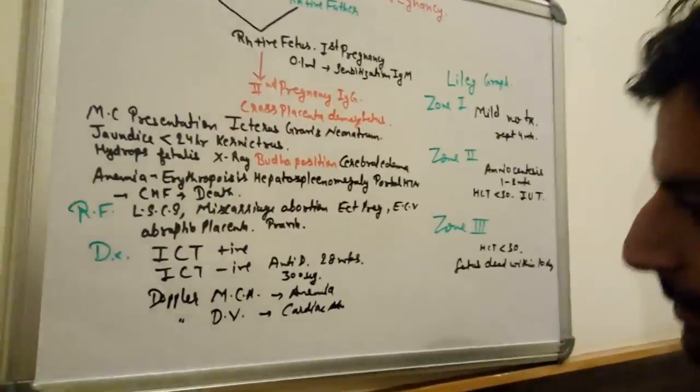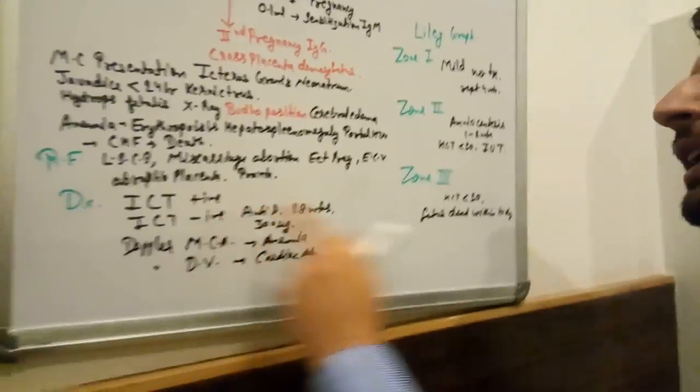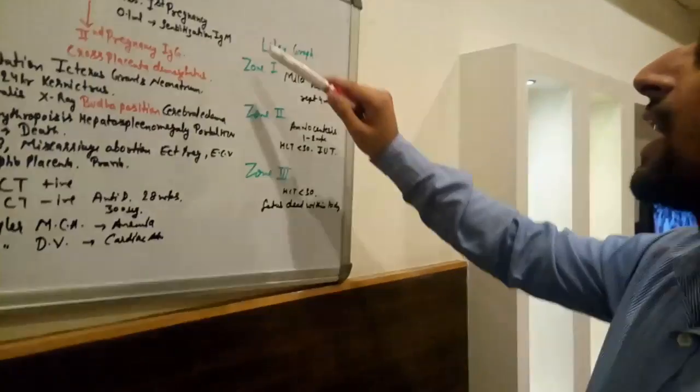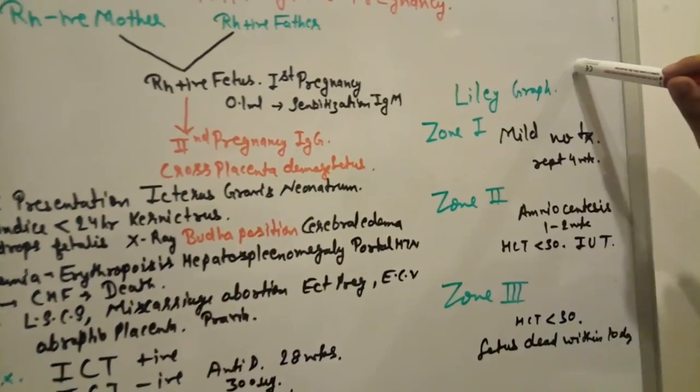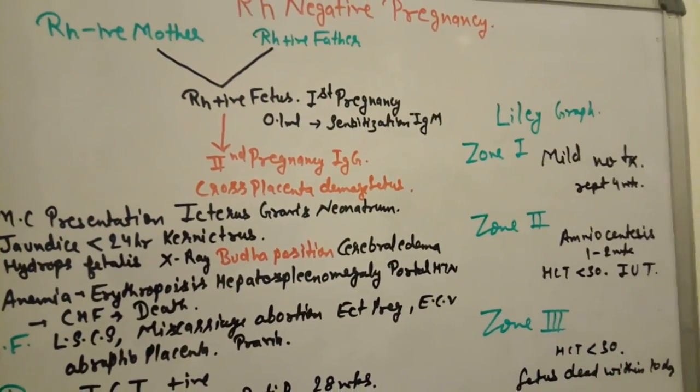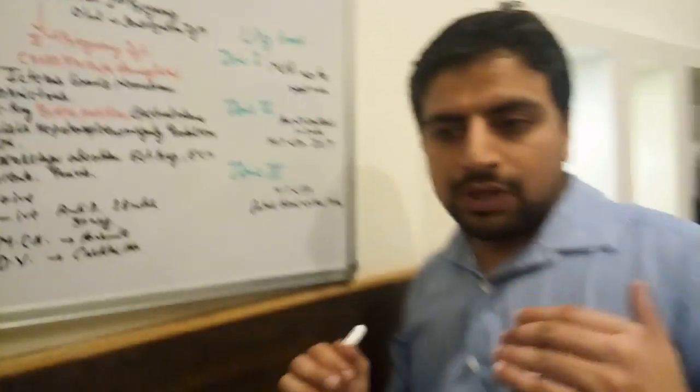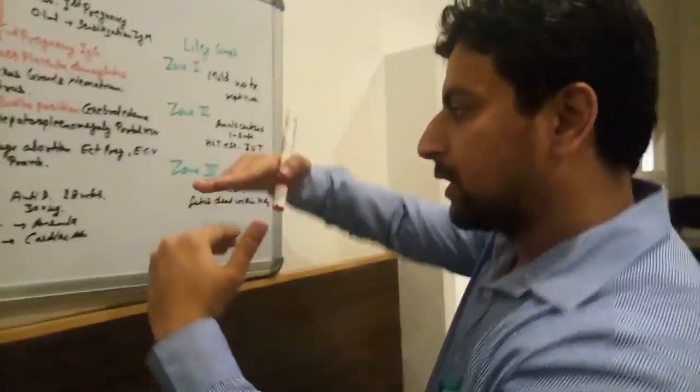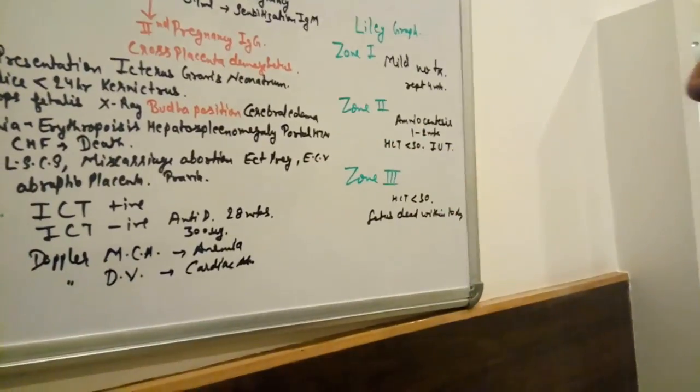I already explained these things about indirect Coombs test. Liley's graph is very important. We know Zone 1, Zone 2, and Zone 3.